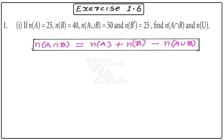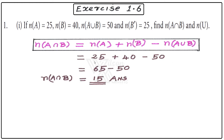Formula for n(A∩B): n(A∩B) = n(A) + n(B) − n(A∪B). Substituting the values: n(A∩B) = 25 + 40 − 50. 25 plus 40 is 65, and 65 minus 50 is 15. So n(A∩B) = 15 is your answer.